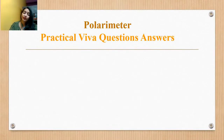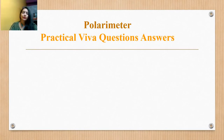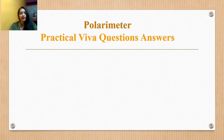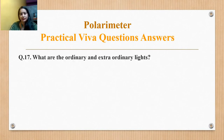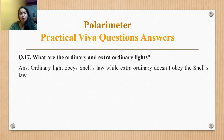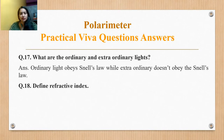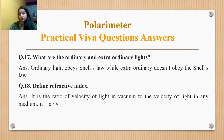What are ordinary and extraordinary rays? In materials like calcite crystal, which show double refraction, we get two rays. Ordinary rays obey Snell's laws, while extraordinary rays do not. Define refractive index: it is the ratio of velocity of light in vacuum to the velocity of light in any medium, mu equals c upon v.